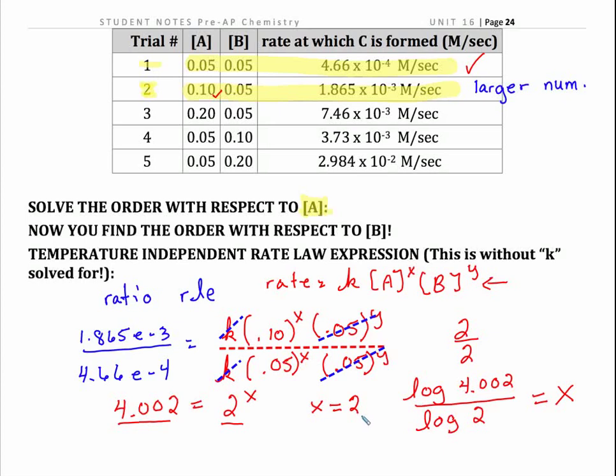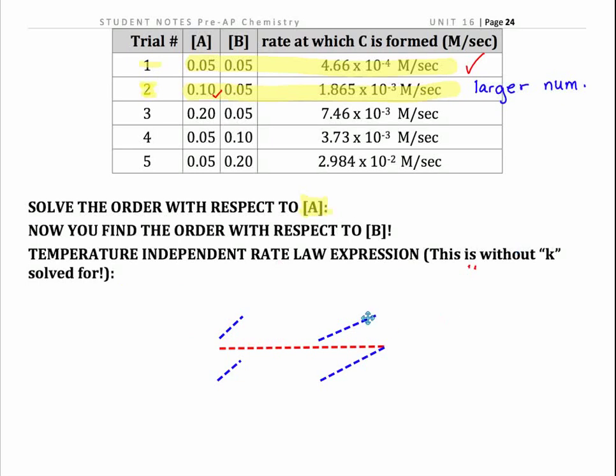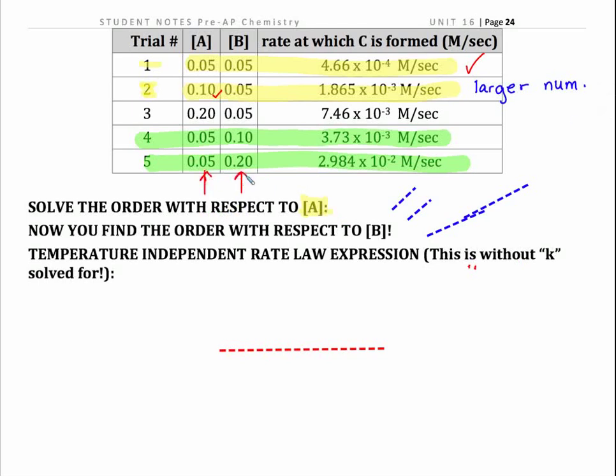So now we know that it's second order with respect to A. So let's attack B now. We're going to do the same thing for B as we did. We're going to look at two trials where this time what we want is B to vary and A to be held constant. There's a variety of possibilities here. I'm going to pick trials 4 and 5 because A is held constant or controlled here and B varies. So I can zero in on the impact of B alone. So that's the goal.